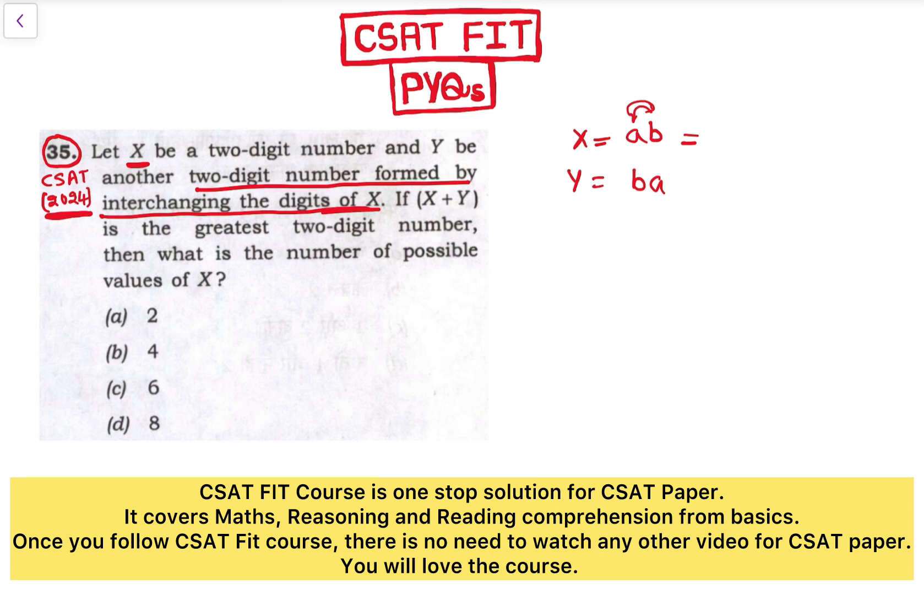This can be written as ab. Say 12 can be written as 10 into 1 plus 2, or 98 can be written as 10 into 9 plus 8. So similarly, this ab can be written as 10 into a plus b.